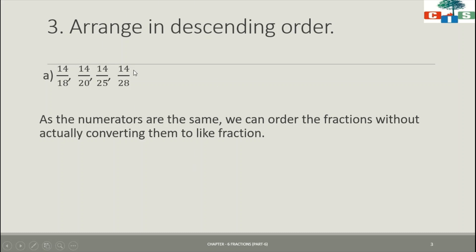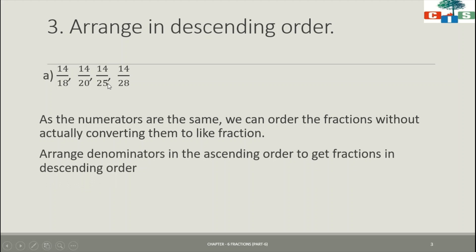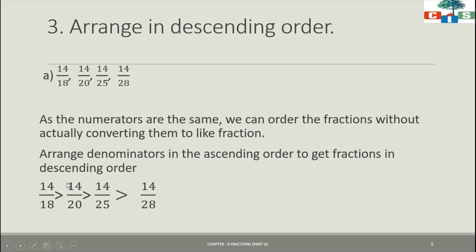Since all the numerators are the same, we have to arrange the denominators in ascending order — ascending order means from smallest number to biggest number. When we arrange the denominators in ascending order, we will get the fractions in descending order. From all the denominators, the smallest is 18, after 18 we have 20, then 25, and then 28. So we arrange the denominators in ascending order and get the fractions in descending order: 14/18, then 14/20, then 14/25, and then 14/28. Here you can observe that the denominators are in ascending order.